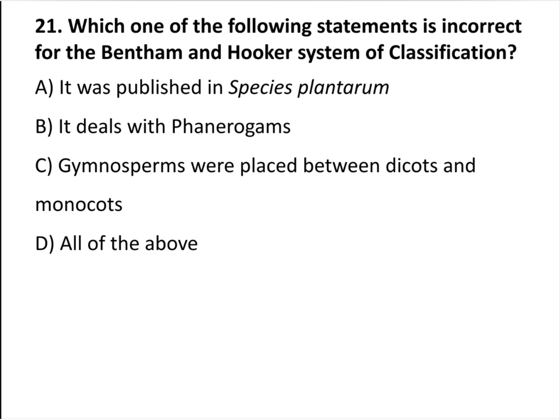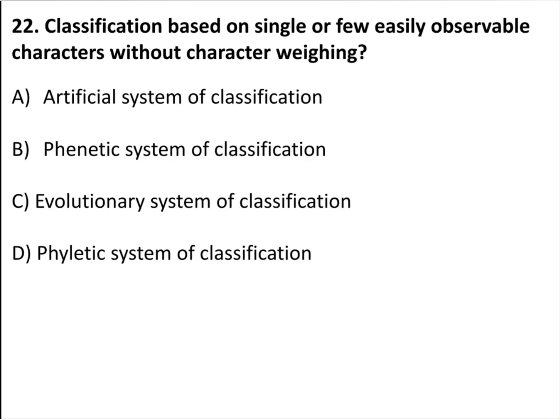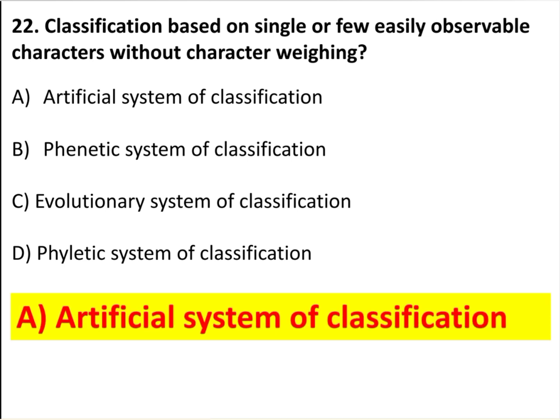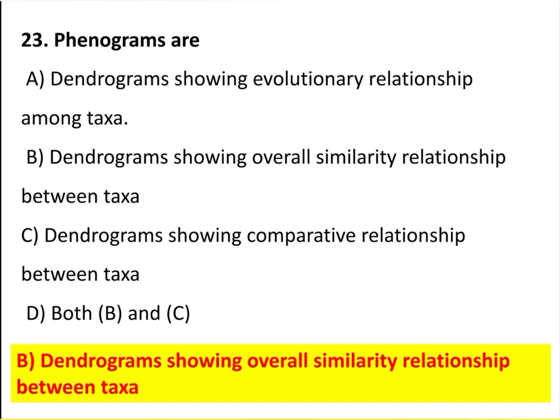Which of the following statements is incorrect for Bentham and Hooker's system of classification? It was published in Genera Plantarum. Classification based on single or few easily observable characters without character weighing is called an artificial system of classification. Phenograms are dendrograms showing overall similarity relationships between taxa.